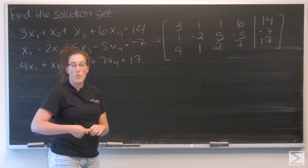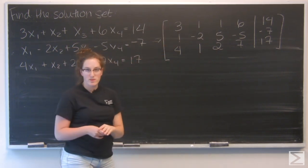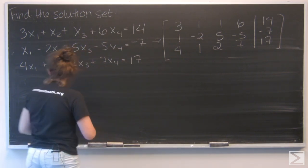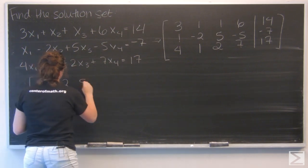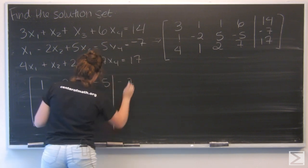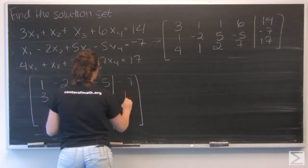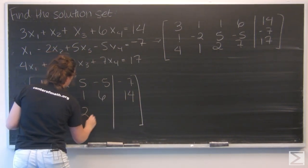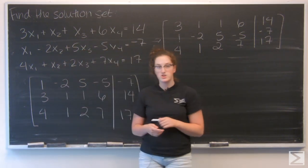So to put this in reduced row echelon form, first I want to put a one in the pivot point, so the top left element of the matrix. I'm going to do that by switching the first and second rows. And then I just carried the third row through, I didn't make any changes.